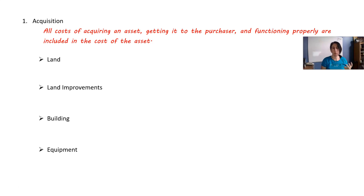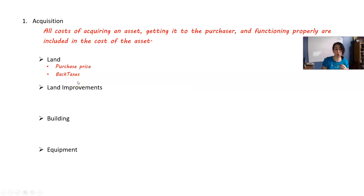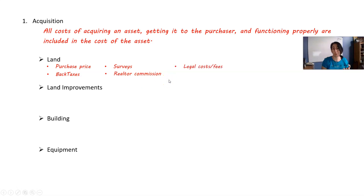Think about it: if you're buying these long-lived assets, it's not just usually the purchase price that gets included. For example, if you were to buy a piece of land, it's not going to be just the land that goes on your books. A piece of land isn't just, say, a $50,000 purchase — there are other costs associated. We'd include that $50,000 purchase price, but maybe you have taxes owed on that land that haven't been paid for a while. You have to pay those taxes to acquire the land. Maybe you have to pay for a survey, pay a realtor some commission fee, and probably some legal costs — you have to pay the lawyer to deal with the contract.